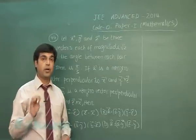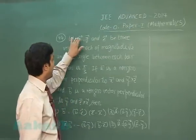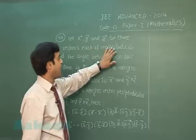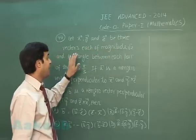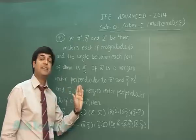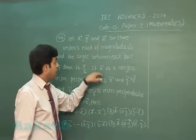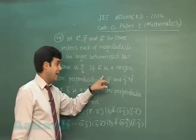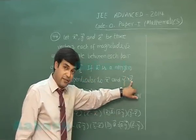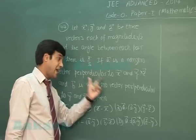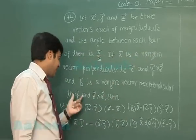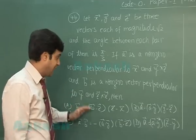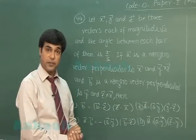Okay, question number 44. Let x, y, and z be three vectors each of magnitude √2 and the angle between each pair of them is π/3. If A vector is a non-zero vector perpendicular to x vector and y × z vector, while b is another non-zero vector such that it is perpendicular to y vector and z × x vector, then we have to conclude from four options.